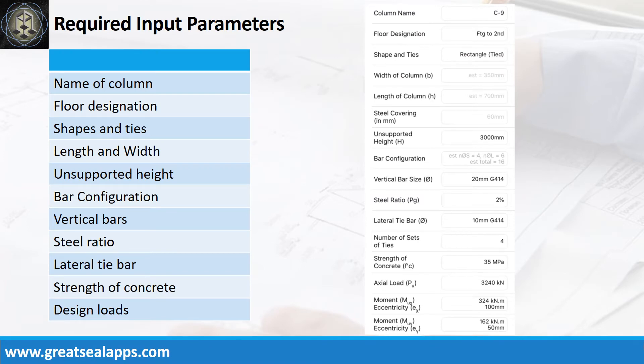Enumerate input parameters required: steel covering 60 mm, unsupported height 3,000 mm, vertical bars 20 mm bar at grade 414, steel ratio 2%, lateral tie bars 10 mm bar at grade 414, strength of concrete 35 MPa, factored axial load 3,240 kN, factored moment and eccentricity at x-axis 324 kNm and 100 mm, factored moment and eccentricity at y-axis 162 kNm and 50 mm.